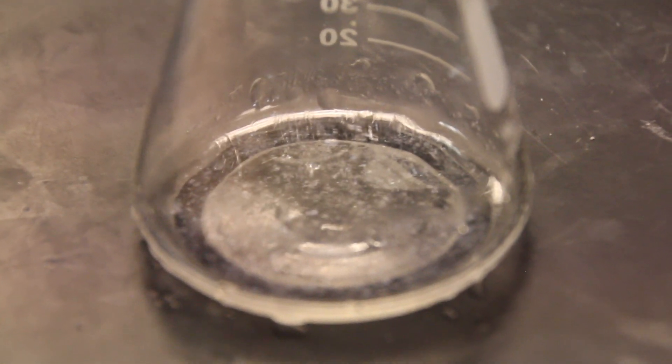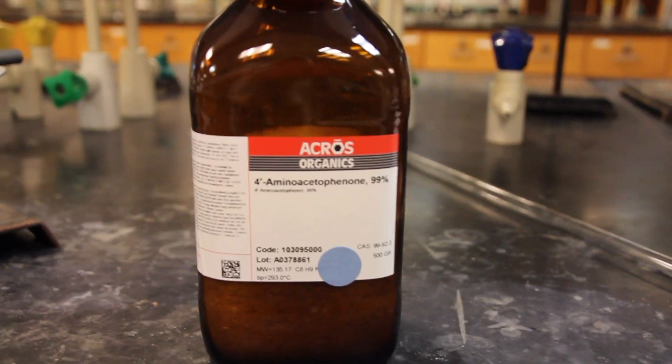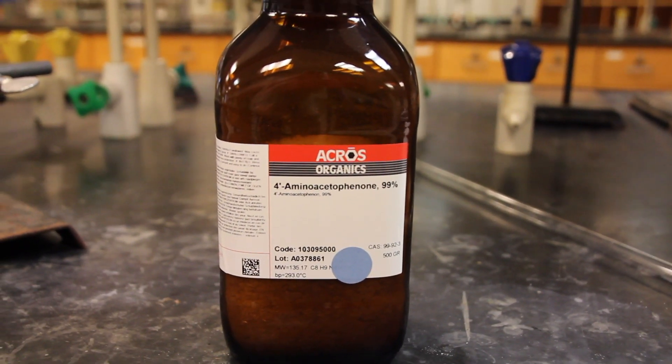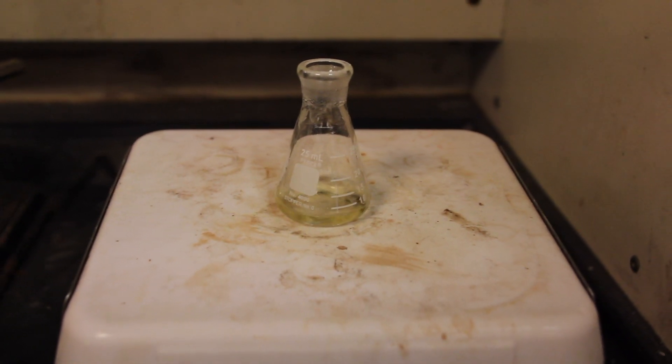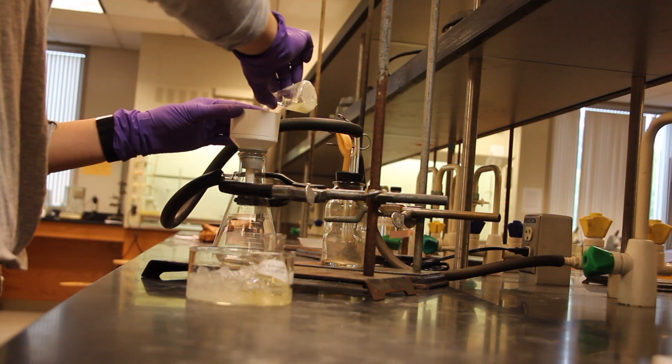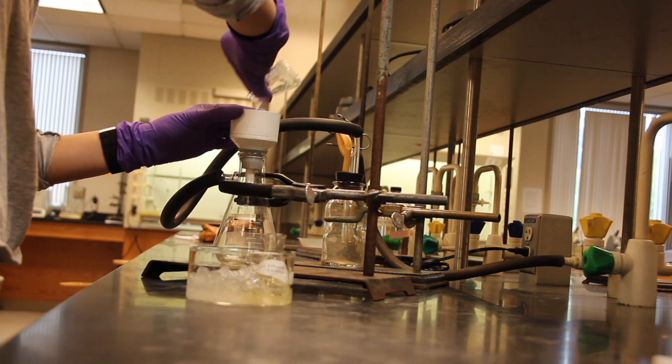In the next step, you're going to start over. Recrystallize a fresh 0.5-gram amount of 4-aminoacetophenone in the determined solvent. Recall that the recrystallization should be done near the boiling point of the solvent, and use either a sand bath or a hot plate to heat your solvent as appropriate.